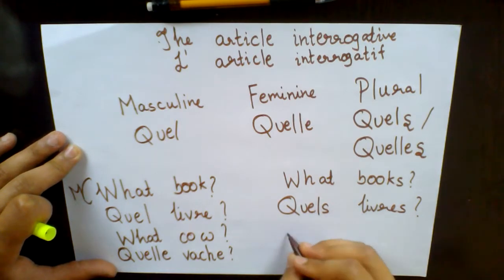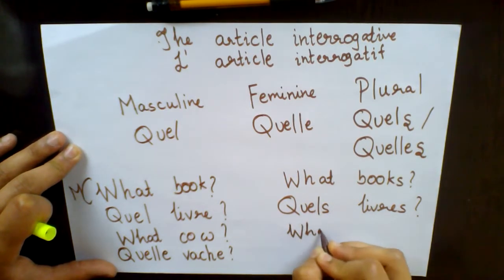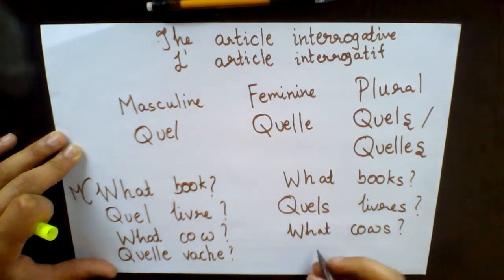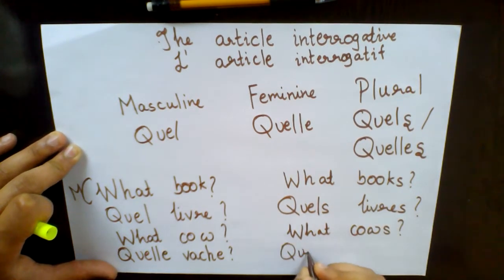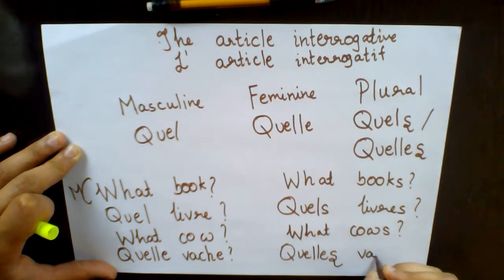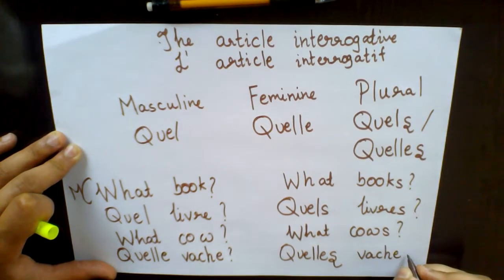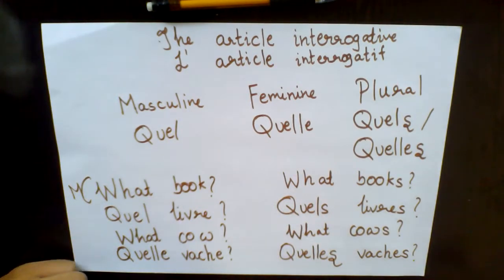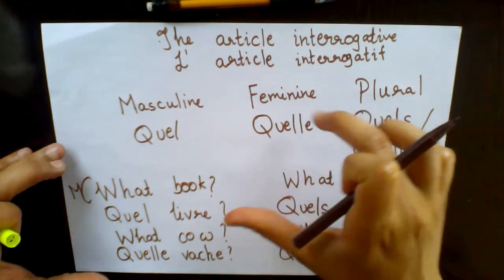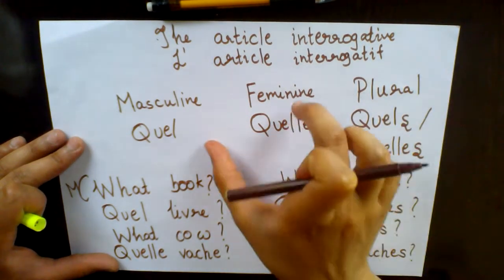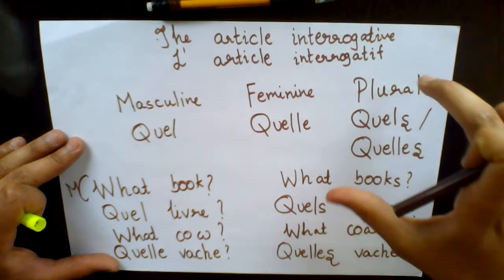'Cow' in French is 'vache' — spelled v-a-c-h-e. For the plural form, 'what cows?' it becomes 'quelles vaches' — you add an 's' to both, but it is pronounced the same way. I hope you understood the basic difference between the masculine, masculine plural, feminine, and feminine plural forms.